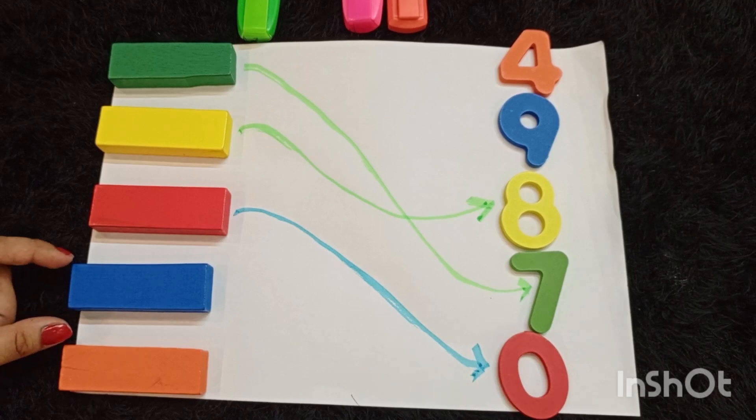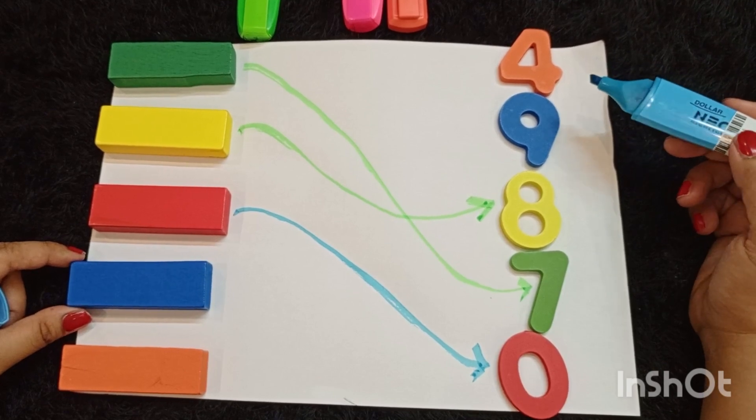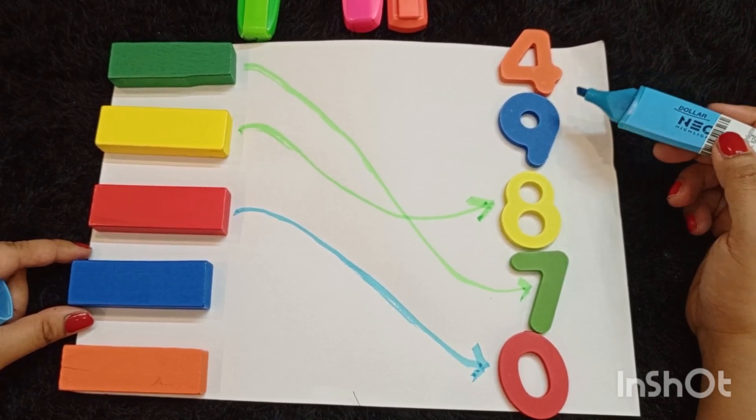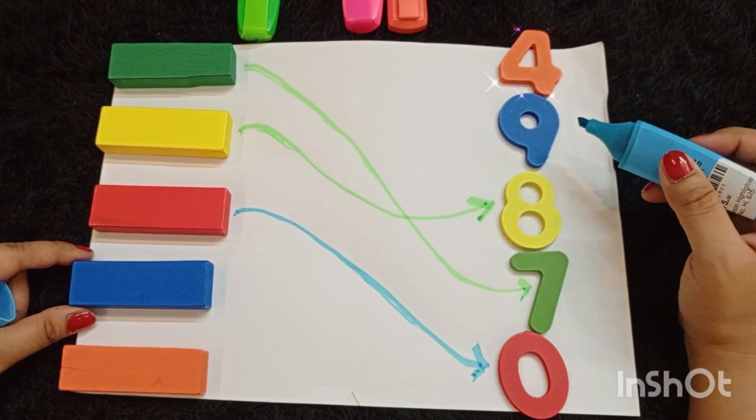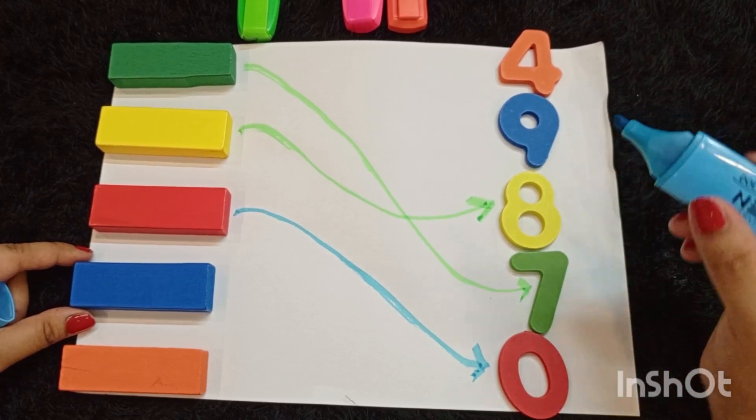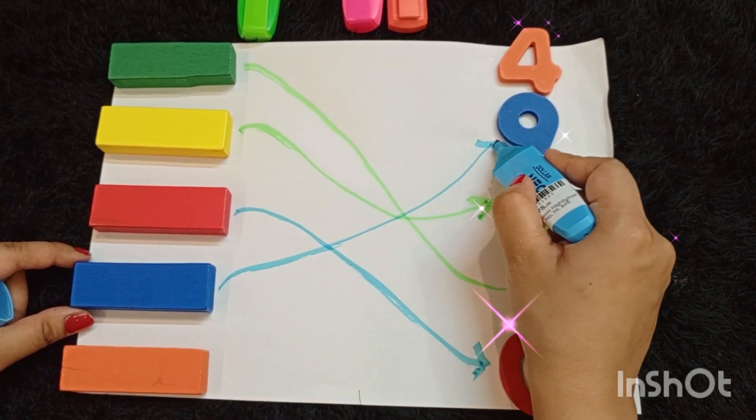Now look at the blue block and find out the number which is in blue color. Number 9. The color of number 9 is blue, so we are going to match the blue block with number 9 like this.